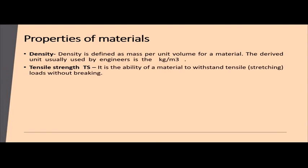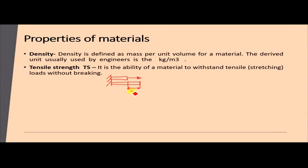Tensile strength is the ability of a material to withstand tensile forces or loads without breaking. For example, consider a rod fixed at one end. If I apply a tensile force on the other side, the rod will get elongated — this elongation is called deflection. As long as the rod does not break under this tensile force, the material exhibits tensile strength.